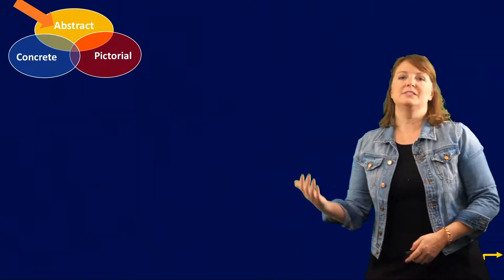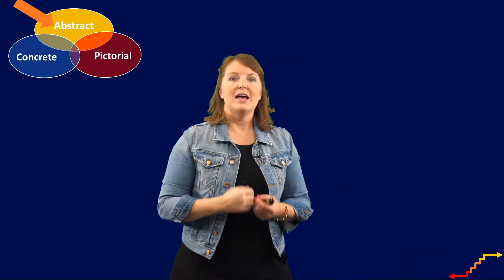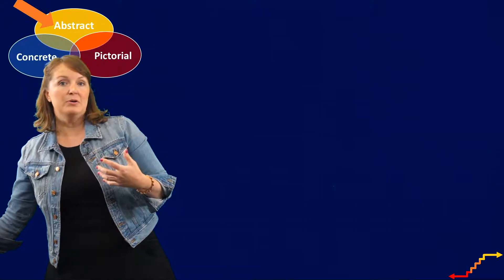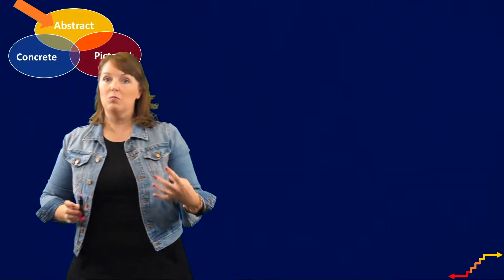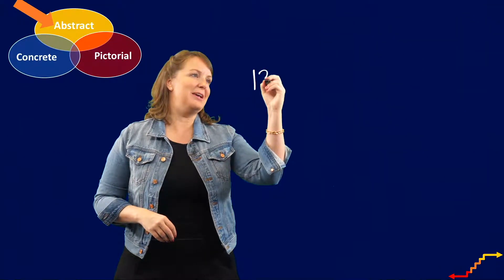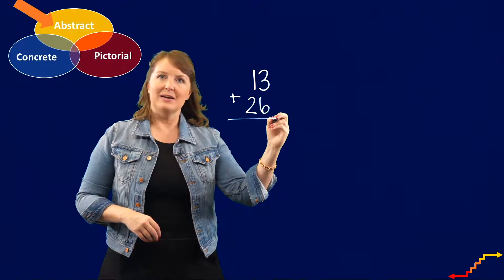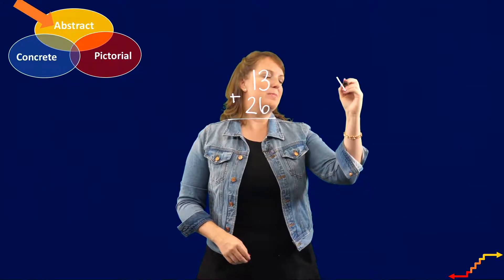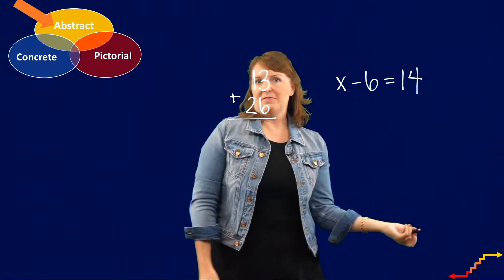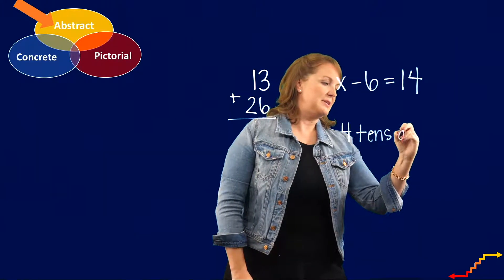And then we're doing all of this to help students understand the abstract in mathematics. And abstract means what does math look like when we're thinking about numbers and symbols and words. So some abstract examples might be if I'm solving a problem just like this. Another abstract example might be a problem like this. If I was thinking about place value, perhaps an abstract example would be this.